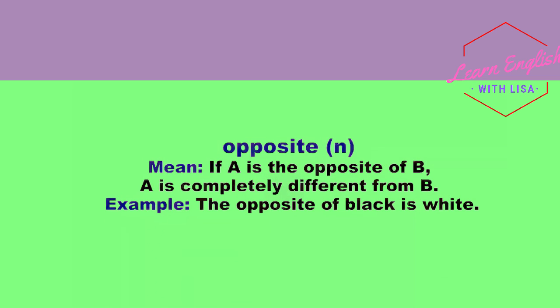Opposite. If A is the opposite of B, A is completely different from B. The opposite of black is white.